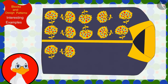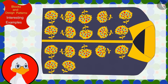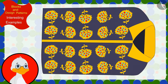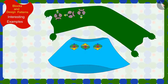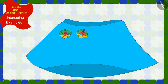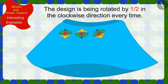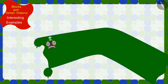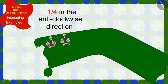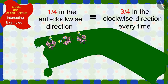Uncle too, like you, found the rule of this pattern and completed the design made on this shirt. Children, can you now help Uncle find the rules of patterns made on this skirt and the dupatta? In the pattern on the skirt, the design is being rotated by half in the clockwise direction every time, and in the pattern made on the dupatta, the design is being rotated by a quarter in the anti-clockwise direction, or three-fourths in the clockwise direction, every time.